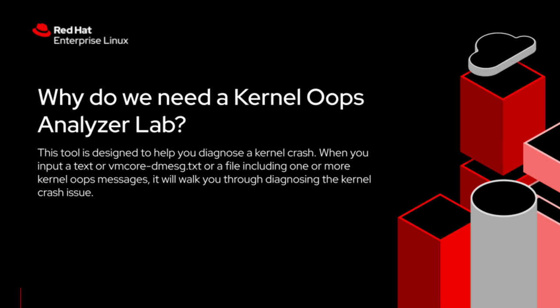If kdump is configured and tested on your system, in the event of a Kernel Panic, a file called vmcore-dmesg.txt along with vmcore will automatically be generated under /var/crash. You simply need to upload it or copy-paste the kernel oops and the lab will do its magic.